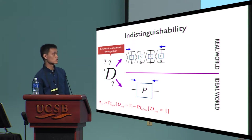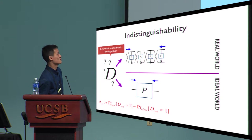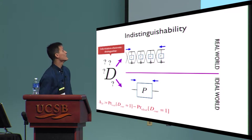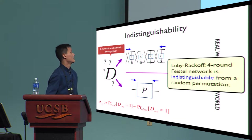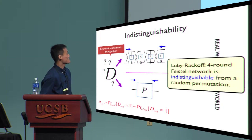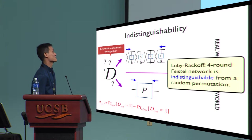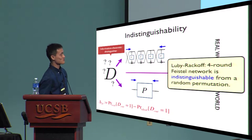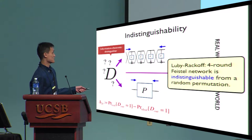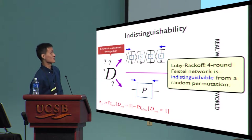In both worlds, the distinguisher has two-sided queries to the oracle, so it can query backwards. The seminal Luby-Rackoff theorem says a four-round Feistel network is indistinguishable from a random permutation — the advantage is negligible for any distinguisher.